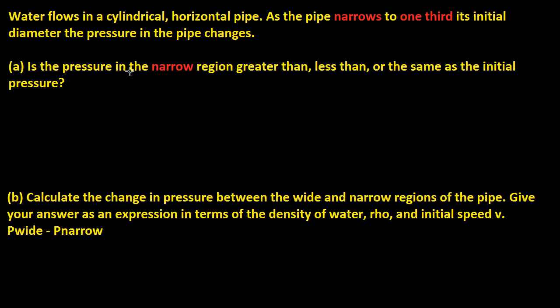So part A says, is the pressure in the narrow region greater than, less than, or the same as the initial pressure? Well, maybe for some it might be greater. But if the pipe goes like this and narrows, then the pressure here should be less. The pressure is less here, so as it narrows it gets smaller. In my case this would be less than.